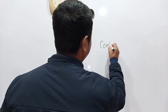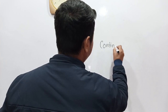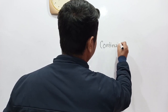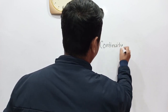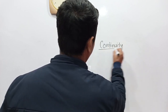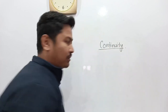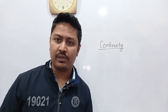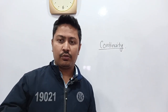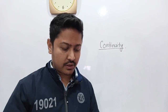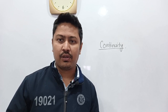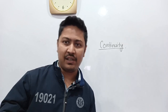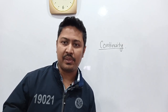So continuity — what does it mean? For a continuous function of one variable, we know the definition. For a function of two variables, the epsilon-delta definition is a bit different, so let's note down the definition.